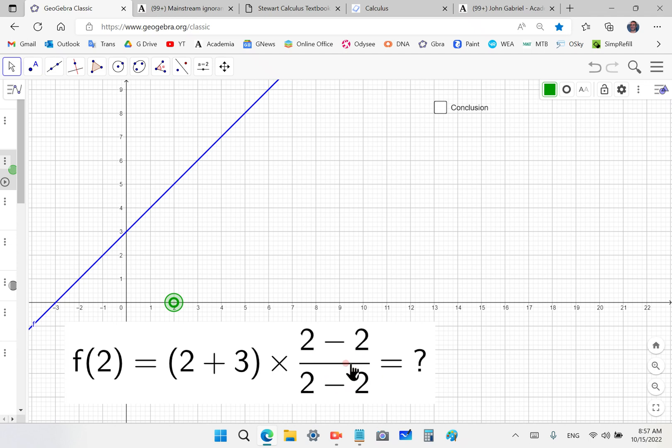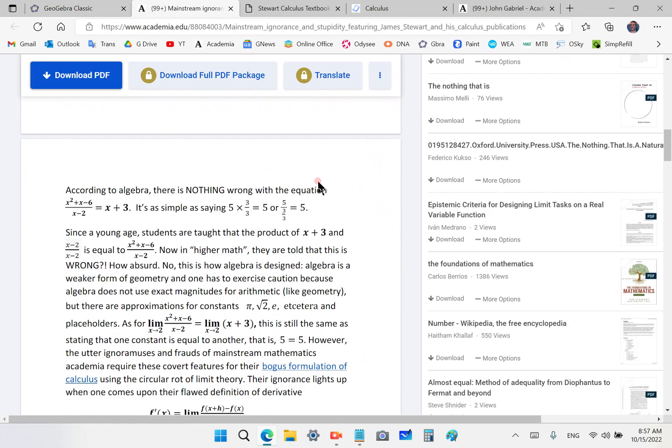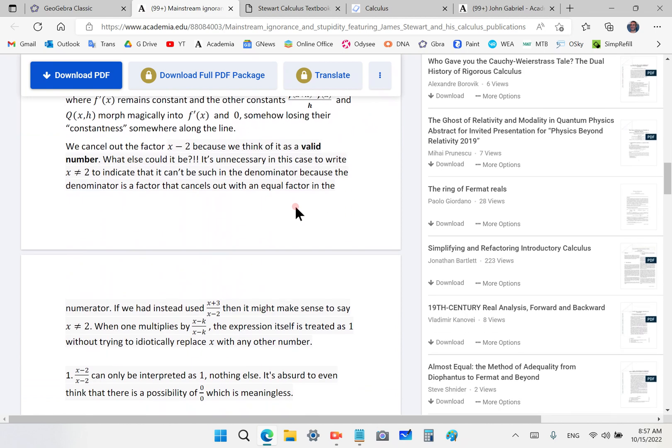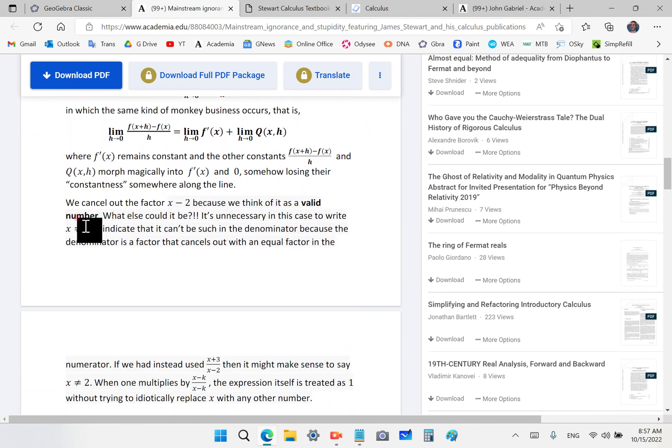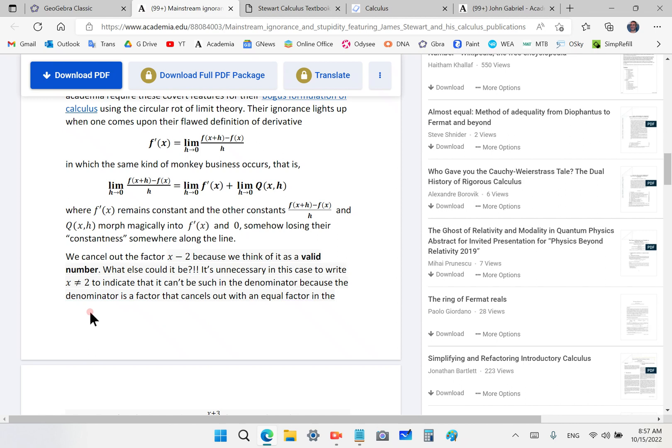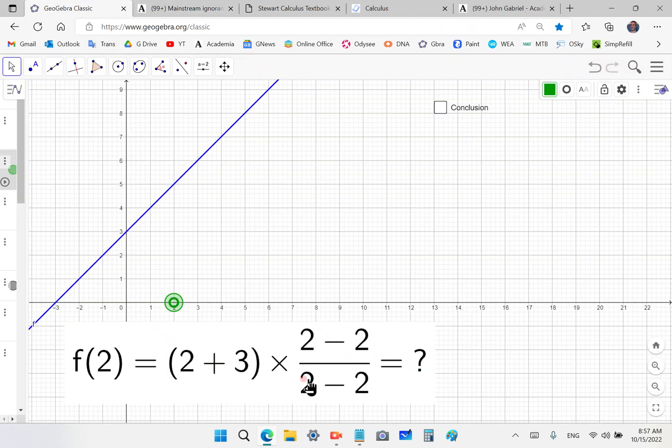So zero over zero is meaningless. So this can only mean one, right? So in this very fine article that I wrote on academia, you can see all the details. And so for example, they tend to cancel out the factor x - 2, because it is a valid number, right? If it's zero, you can't cancel it out anymore. So I mean, you can do everything with every other number, but you can't do it with zero. So you can't treat zero like you treat other numbers, because zero is not a fucking number, you fucking morons.